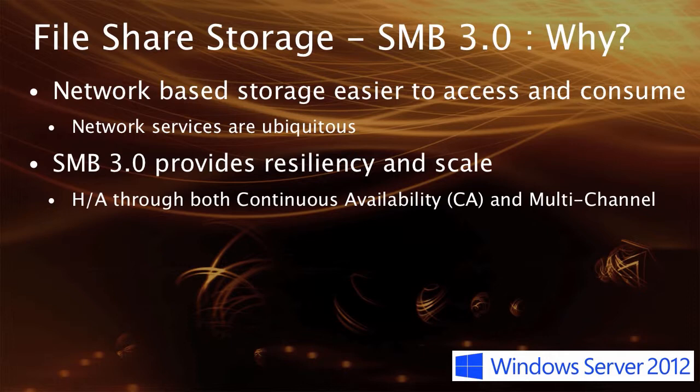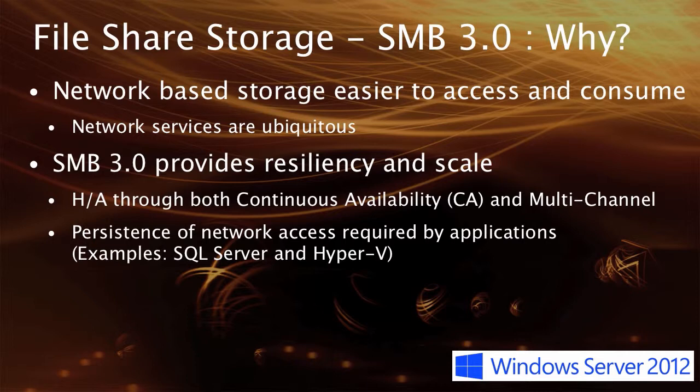If there are multiple paths that a client SMB 3.0 environment can get to an SMB 3.0 server, you get resiliency in the fact that those discrete paths are understood and that they're aggregated together. So if one of them fails, the workload can continue on the remaining paths available to the server. When we add those sorts of scalability and resiliency to this SMB model, we have the ability to deploy enterprise-class applications into that environment.